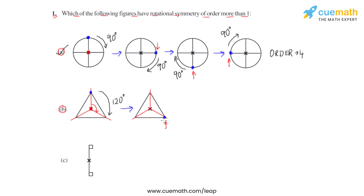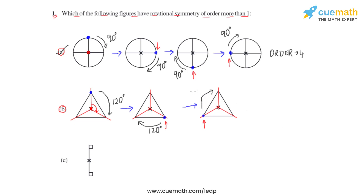Rotating again by 120 degrees in the clockwise direction, we observe the change in position of the blue dot. After this second 120-degree rotation from the question figure, the blue dot moves to a new position, and the figure is again exactly the same size as the question figure.